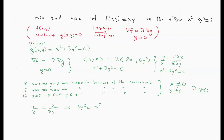Now we plug 3y² = x² into the constraint, replacing 3y² with x². We get x² + x² = 6, which means x² = 3, so x = ±√3.